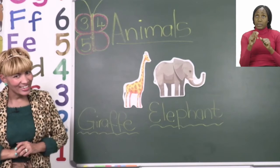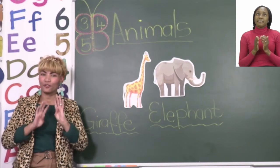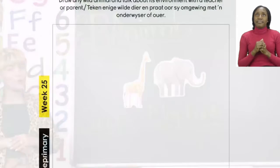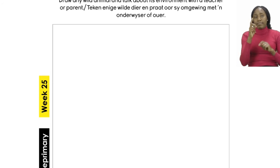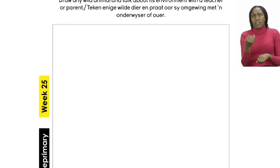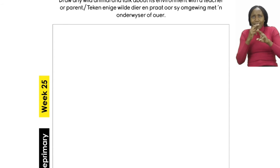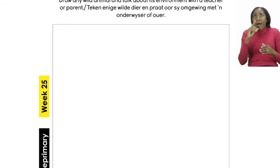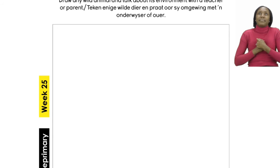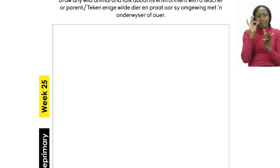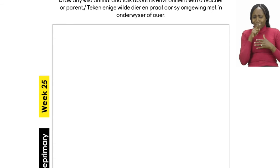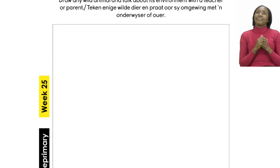I'm sure you will have lots of fun coloring all your wild animals. But before we continue with our coloring, let's quickly turn our booklets to page 4. Here on page 4 you will see a big blank space. What we want you to do here is draw. You have to draw any wild animal and then you have to talk about its environment. You can talk about this animal with your teacher or parent, and you can go ahead and decide what animal you want to draw.